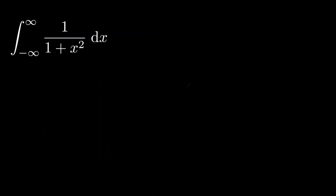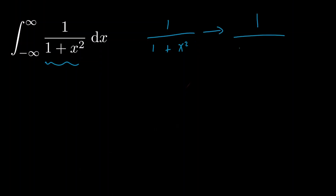For our second solution we're going to use contour integration. We're going to rewrite our function as an analytic function of z. So we have 1 divided by 1 plus x² and we're going to rewrite that as 1 divided by 1 plus z².